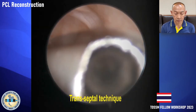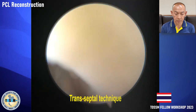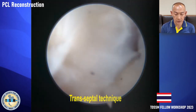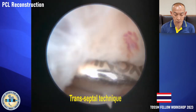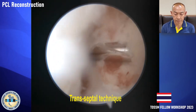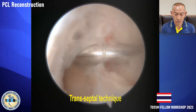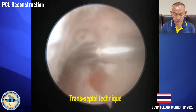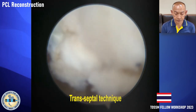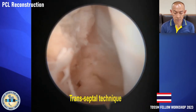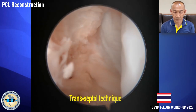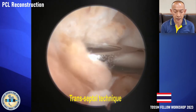The shaver was passed toward the posteromedial septum behind the ACL and advanced into the intercruciate space. Then the shaver was passed toward the posteromedial septum behind the PCL to divide the posteromedial septum, entering the posteromedial compartment. The shaver was then passed behind the PCL.